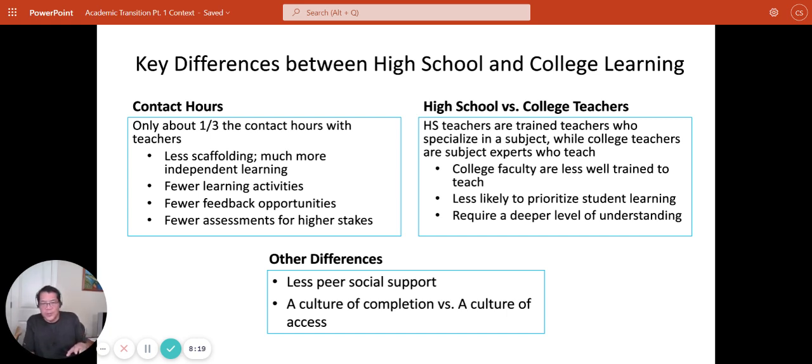And then finally, in high school, there's a culture of completion. Whereas in college, there's a culture of access. In high school, they're trying to get as many students through high school as possible. There's an emphasis on that. And that emphasis is lacking in college. Imagine a high school that had a 59% completion rate after six years. That high school would not be considered successful, but that's the norm for college level work. So there is a huge difference between the academic context of high school and college.